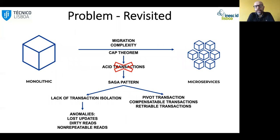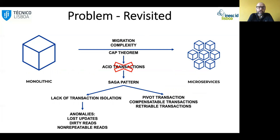The work we are presenting today leverages on top of our previous research. Now we are looking at: given that we need to migrate this functionality, how are we going to implement it in the microservices architecture? Basically, you have the saga pattern, which is proposed to deal with the lack of transactional isolation. It defines, for instance, semantic locks — intermediate states — and you need to deal with these intermediate states when you use the saga pattern.